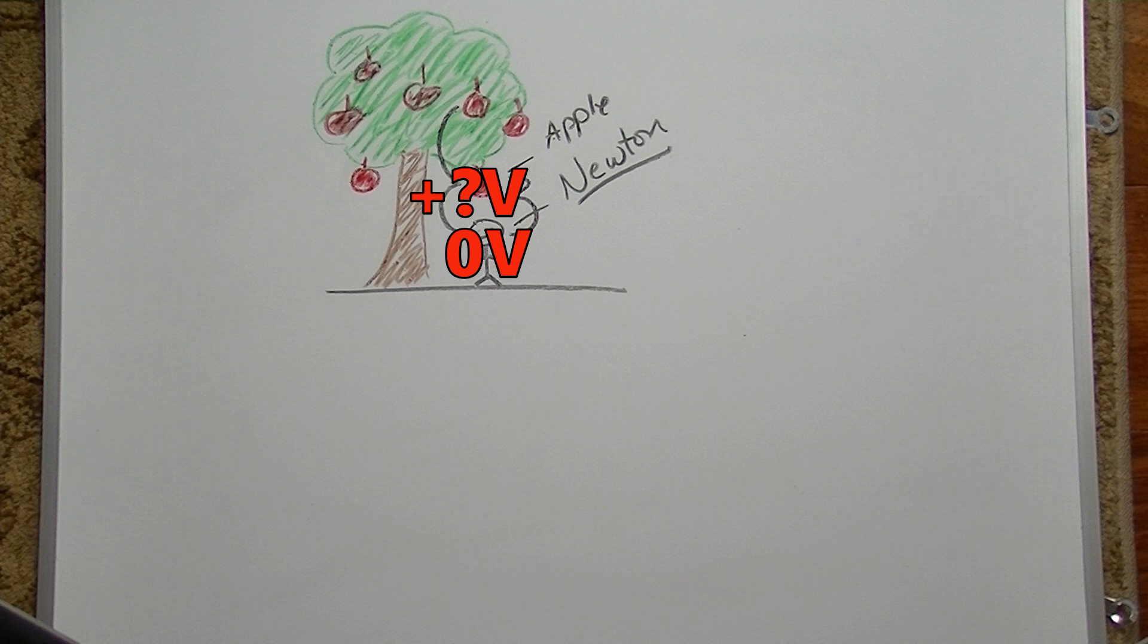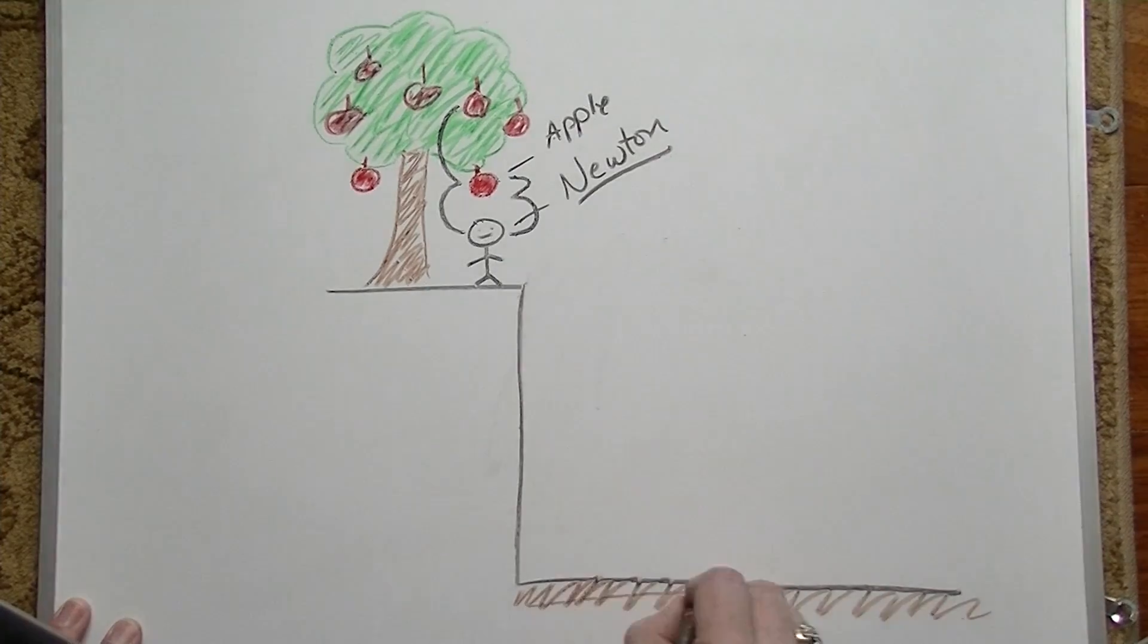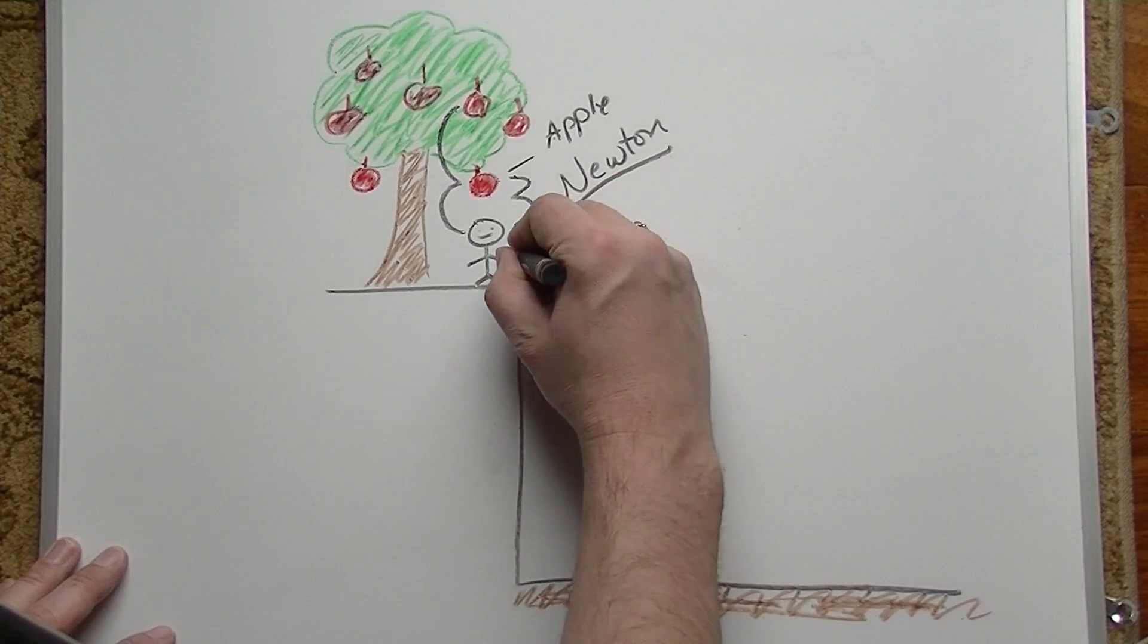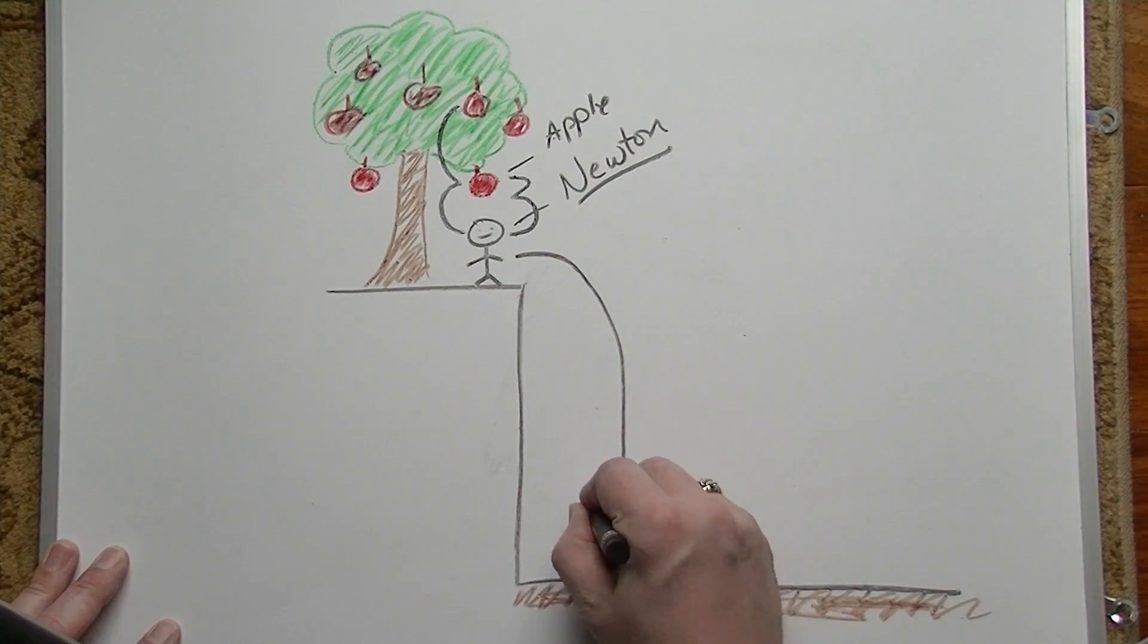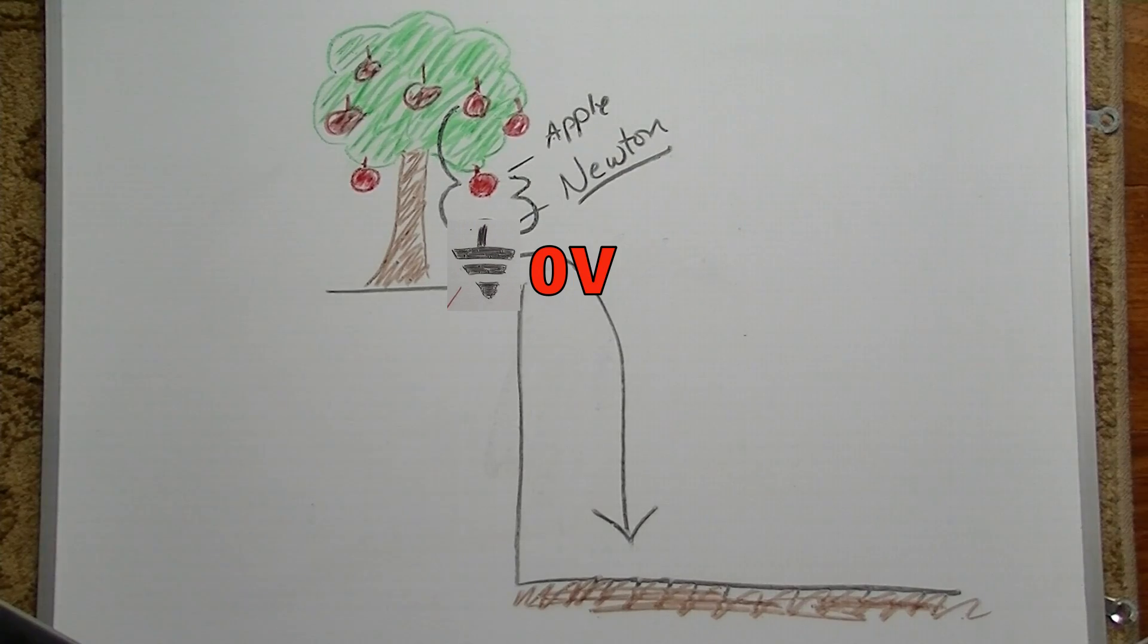Now let's imagine our apple tree and Newton are both high up on a mountain top. The potential energy between the apple and Newton have remained the same, but now the potential energy of both relative to the valley floor have increased. While Newton's head might still be thought of as our circuit ground or zero point in this circuit, there is now a potential energy between Newton's head and the valley floor below, which could be thought of as earth ground.